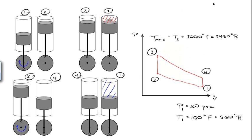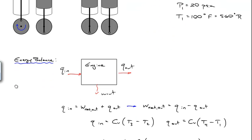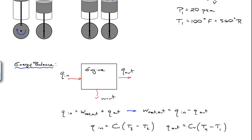On our diagram, Q_in occurs between steps two and three — that's where heat enters. Q_out occurs between four and one — heat leaves the system, which in a real engine would be expelled as exhaust. Because both processes occur at constant volume, Q_in equals C_V times (T3 minus T2), and Q_out equals C_V times (T4 minus T1). We know T3, the maximum temperature of 3460 Rankine, and T1, the temperature of air being drawn in. But we don't yet know T2 or T4.